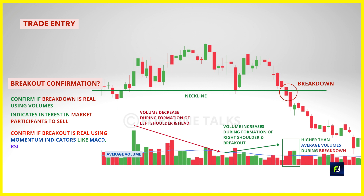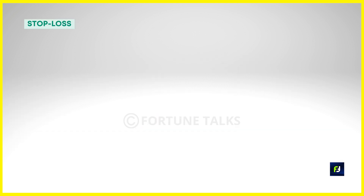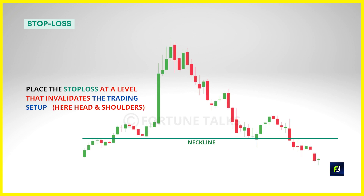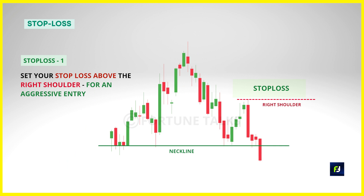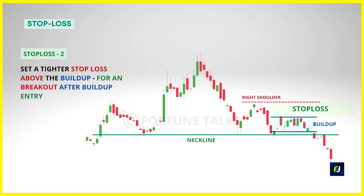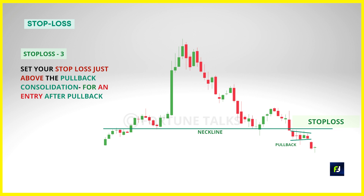Now let's talk about stop loss placement. The stop loss should be at a level that if breached will invalidate your trading setup. If the price moves above the right shoulder, the pattern gets invalidated. So if your entry was aggressive — as and when the price broke down from the neckline — set your stop loss at or above the right shoulder. If you took a short entry after a buildup near the neckline, you get the freedom to place a tighter stop loss just above the buildup, which will boost your reward-to-risk ratio. If you shorted after a primary pullback, set your stop loss above the highest price in the group of pullback candles or just above the neckline.